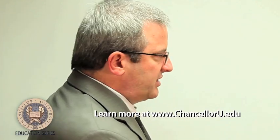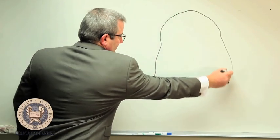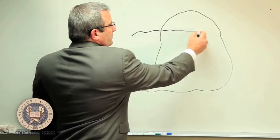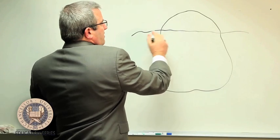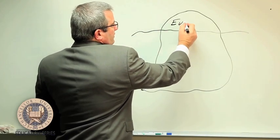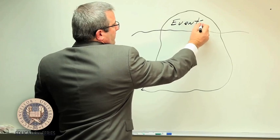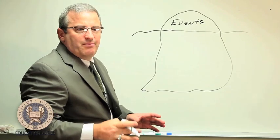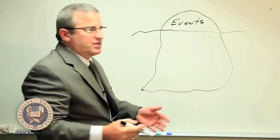So we start out maybe basically just thinking about an iceberg. At the top of the iceberg, this piece above the water, we have events. Events are those single items that happen within an organization or within society.